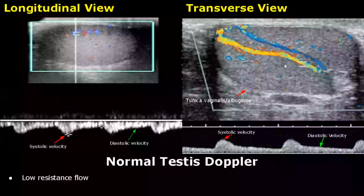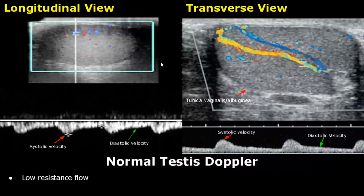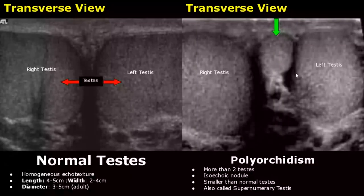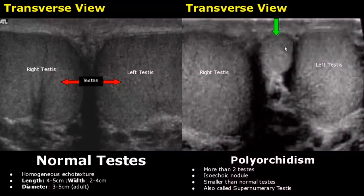The spectral Doppler waveforms of the testis have a low resistance flow — here is the systolic velocity and here is the diastolic velocity. It has a large quantity of forward diastolic flow. In polyorchidism there is an extra testis which is isoechoic to normal testis and smaller in size. It is also called supernumerary testis.